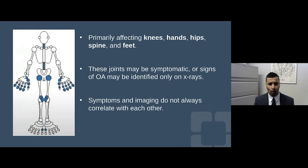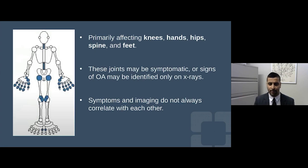OA primarily affects weight-bearing joints — knees, hips, and spine. When osteoarthritis affects the back, we often refer to it as degenerative disc disease. Importantly, the symptoms of osteoarthritis and the x-ray or radiographic findings do not always correlate. If I x-rayed everyone's knee, we'd see significant osteoarthritis or joint space narrowing — but not all of them would have clinically symptomatic knee osteoarthritis, and the same can be said vice versa.